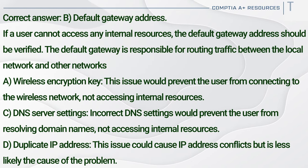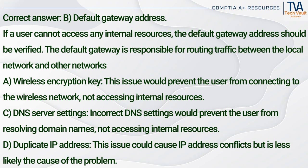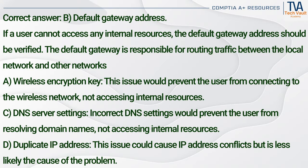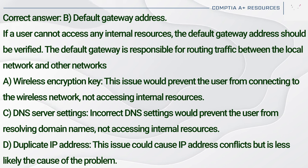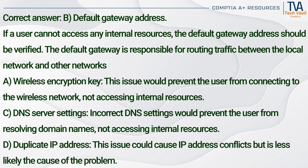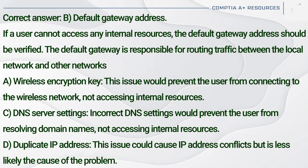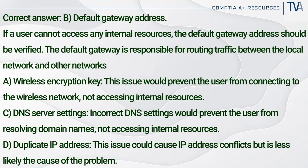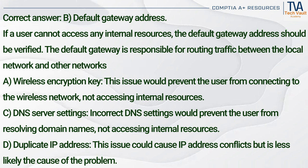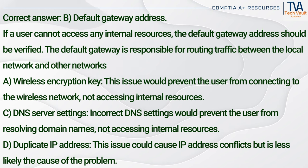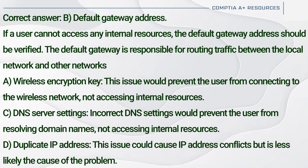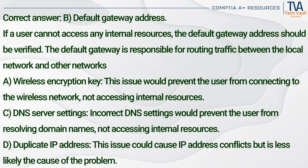Correct answer: B. Default gateway address. If a user cannot access any internal resources, the default gateway address should be verified. The default gateway is responsible for routing traffic between the local network and other networks. The wireless encryption key (A) would prevent the user from connecting to the wireless network, not accessing internal resources. Incorrect DNS settings (C) would prevent the user from resolving domain names, not accessing internal resources. A duplicate IP address (D) could cause IP conflicts but is less likely the cause.